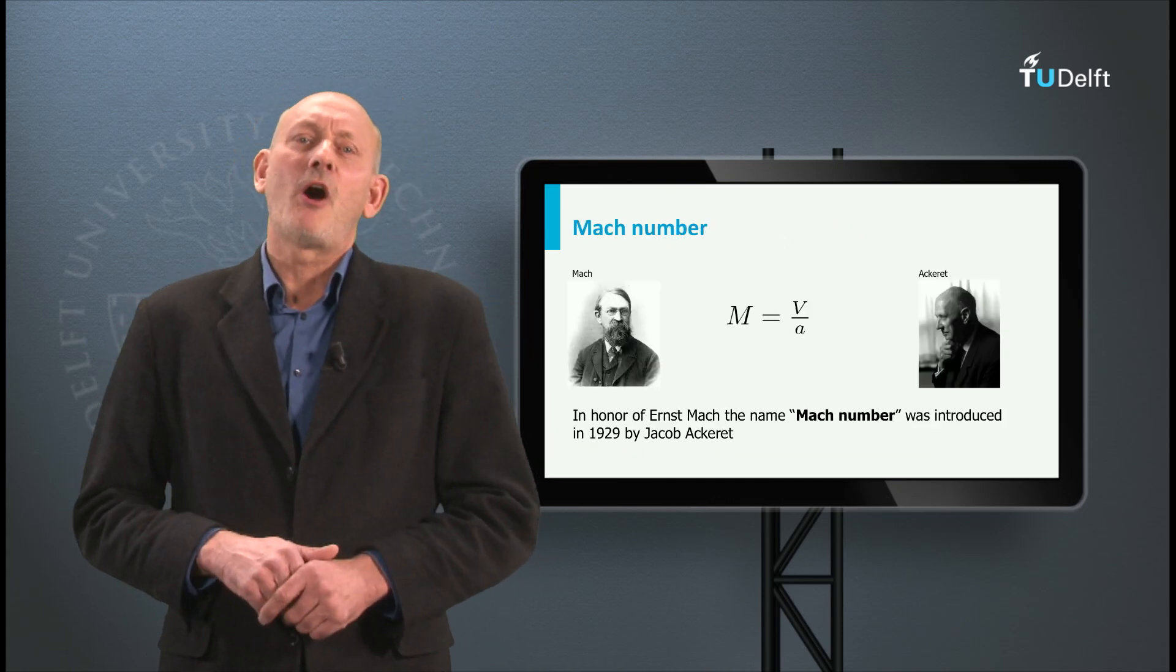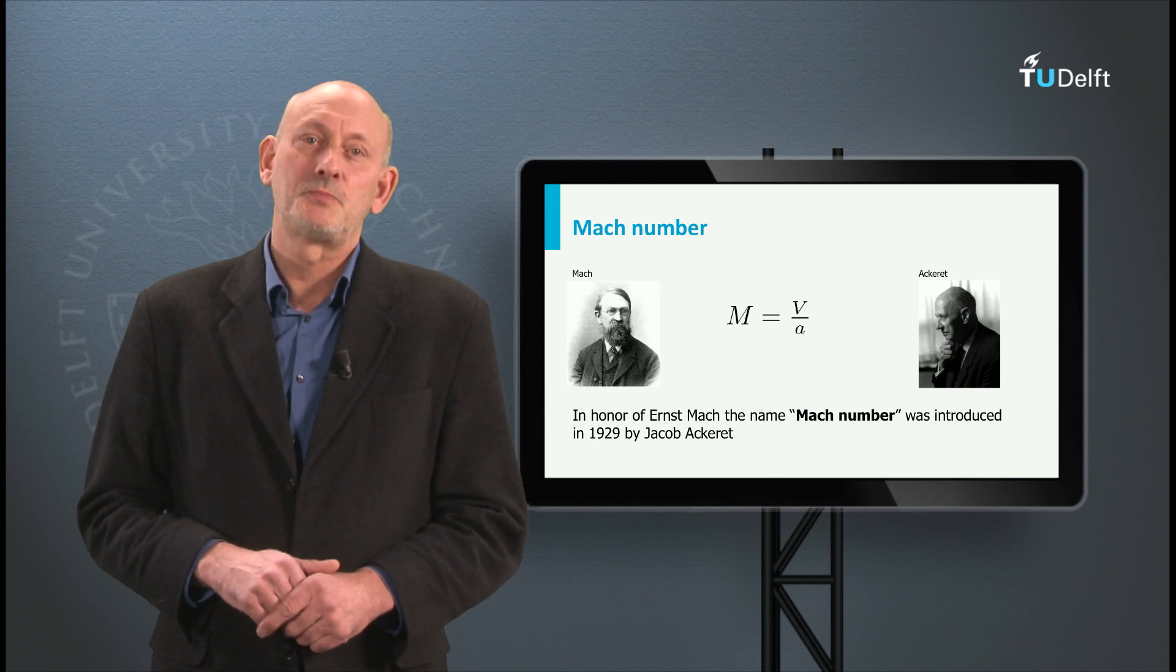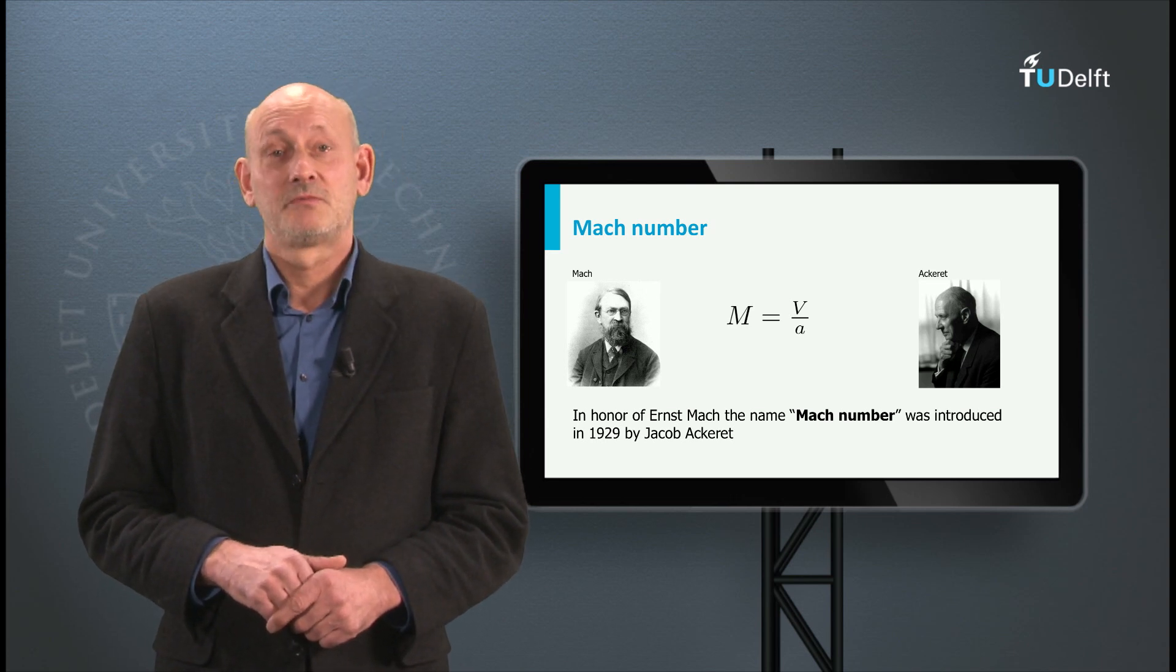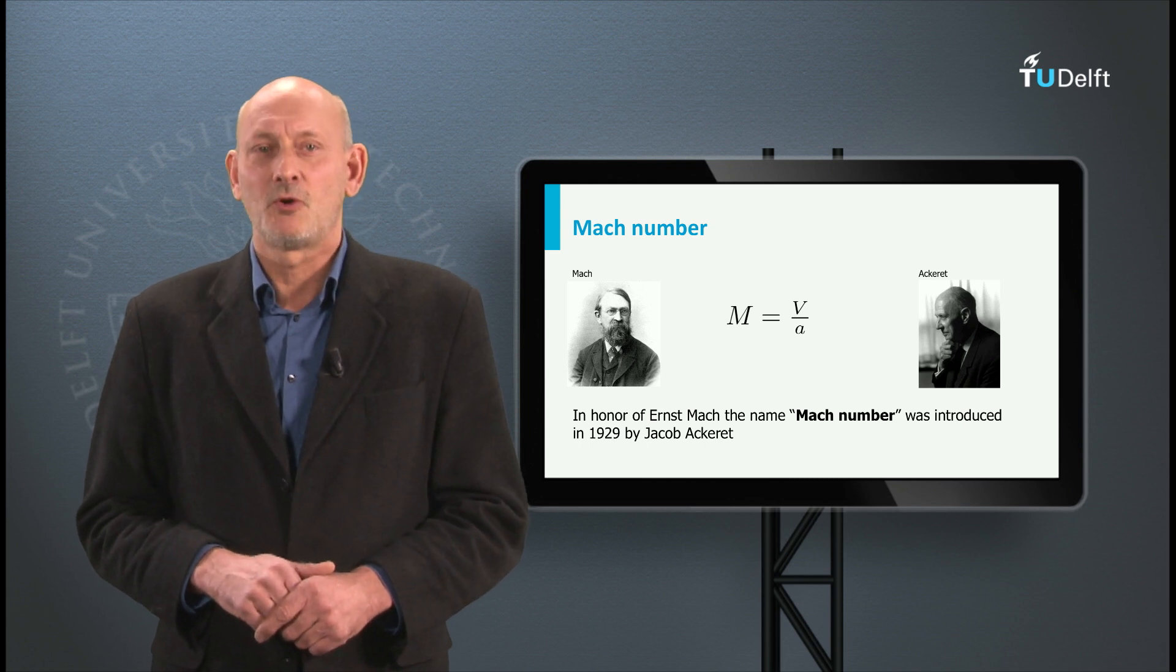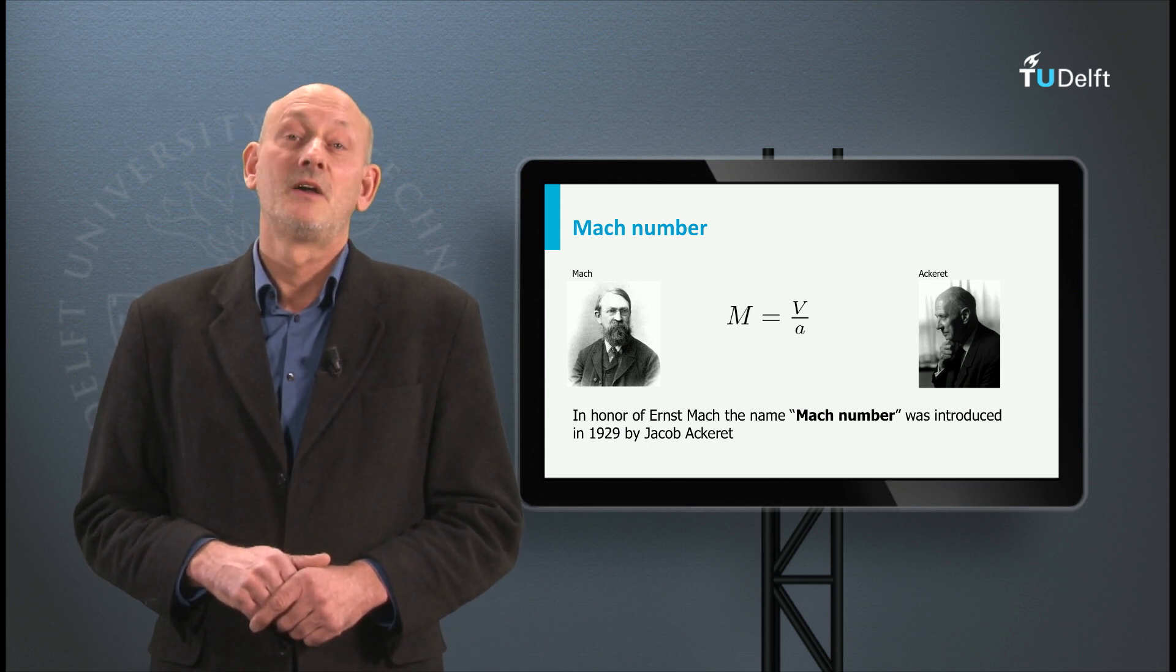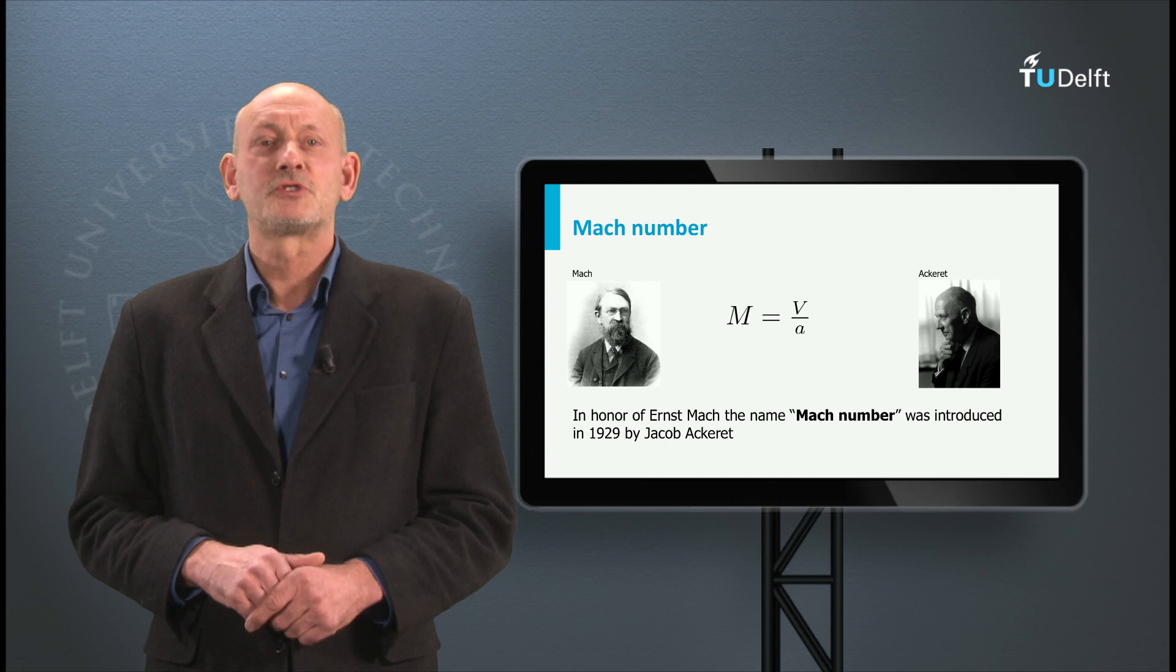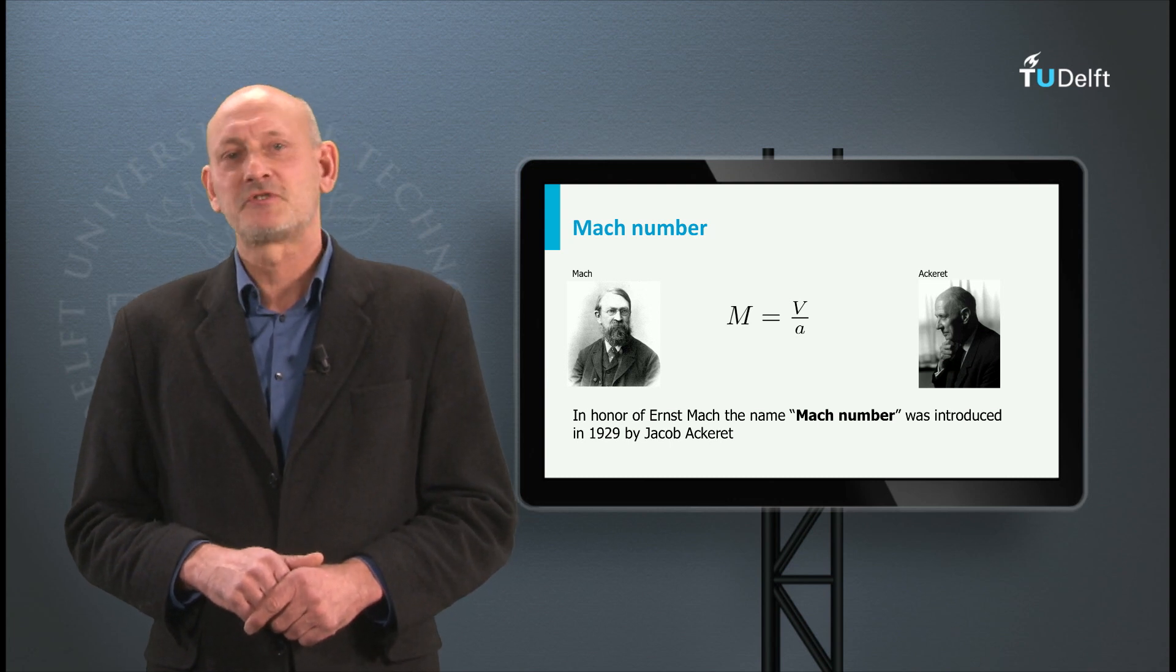In aerospace engineering we often use the ratio of the actual speed over the speed of sound, V over A. It's called the Mach number. It was named after the Austrian physicist Ernst Mach, who was one of the first to study compressibility and the speed of sound in great detail.